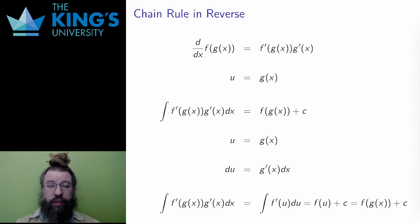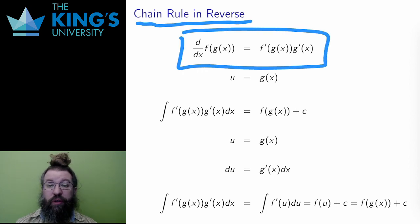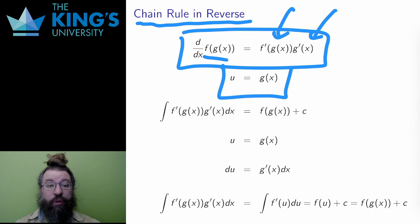The substitution rule is the chain rule in reverse. Here is the chain rule. The derivative of the composition is the derivative of the outside, evaluated on the inside, multiplied by the derivative of the inside. A key part of this process was labeling the inside with a temporary variable, u equals g(x).